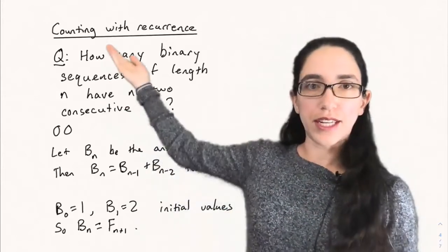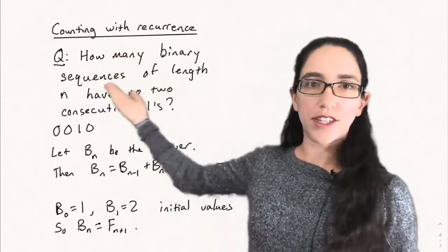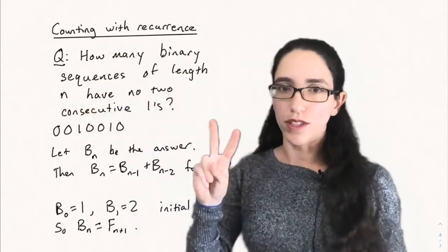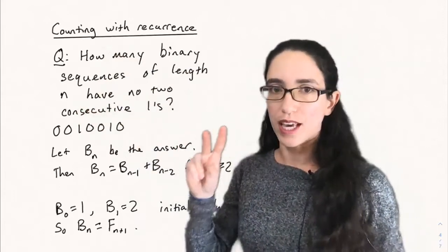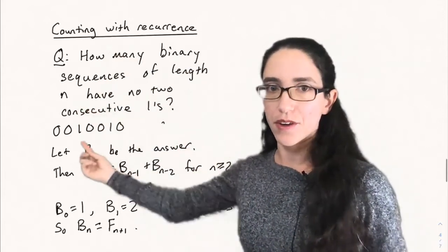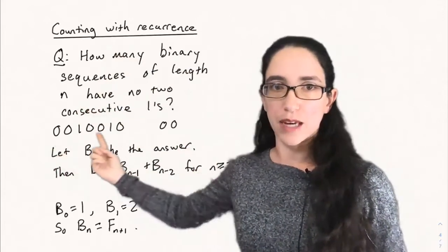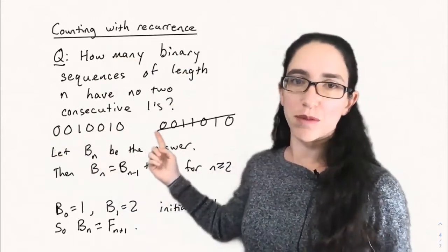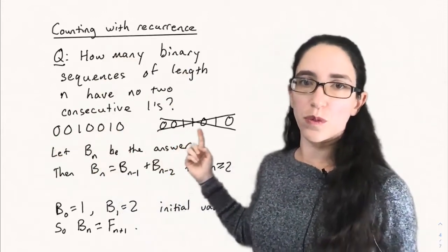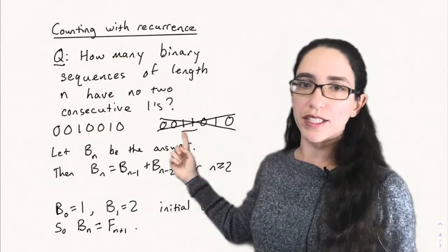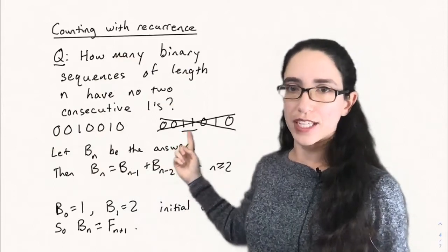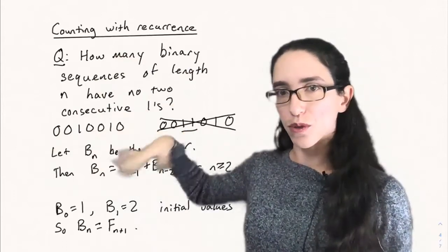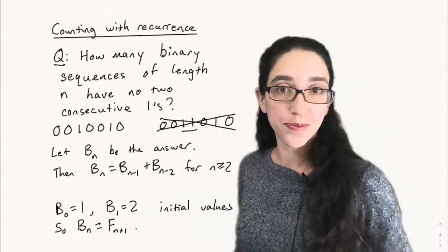For instance, say we're trying to count how many binary sequences of length n have no two consecutive ones. So two ones can't be next to each other. Here's a good example, and here's a bad example — 0011010 — that's bad because those two ones are next to each other. So we're going to eliminate all such sequences and see how many are left.